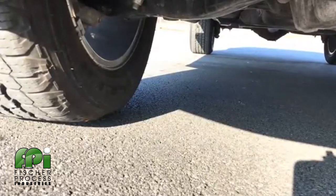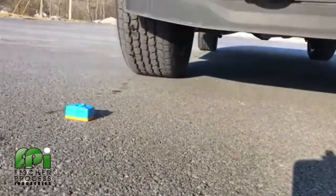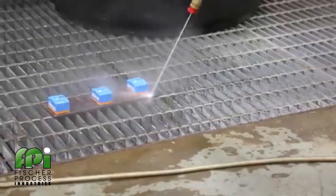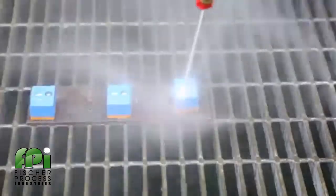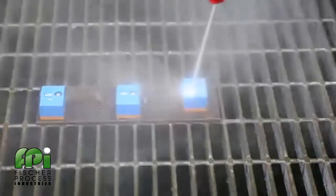One problem we did find after running it over was it made the sensor dirty. Not that this affected the performance, it just didn't look as nice, so we decided to wash it using a 2,000 psi pressure washer. There, nice and clean.